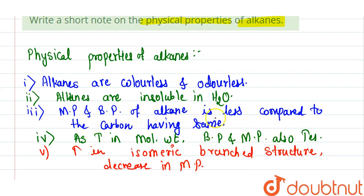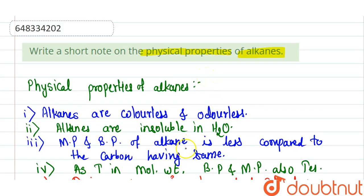Melting point and boiling point of alkane is less compared to that the carbon having same molecular weight. Alkanes are insoluble in water and alkanes are colorless and odorless. So these are the physical properties of the alkane. Thank you.